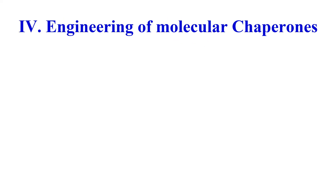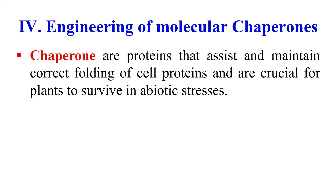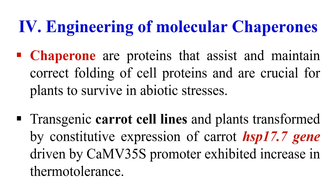The next strategy is the engineering of molecular chaperone genes. Chaperones are proteins that help in the correct folding of proteins. Whenever there is stress to the plant, there is difficulty in proper protein folding, and these chaperone proteins help resolve that. If we introduce genes for these proteins, we can protect our plants from abiotic stress. For example, carrot crop inserted with the HSP17.7 gene — a heat shock protein — driven by the CaMV 35S promoter showed increased thermotolerance, demonstrating that molecular chaperones help in protection against abiotic stresses.